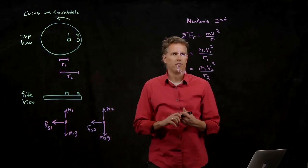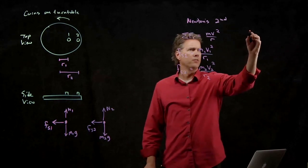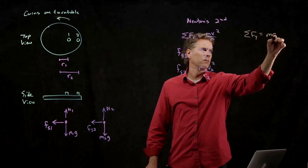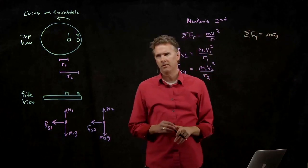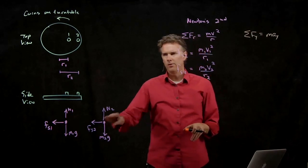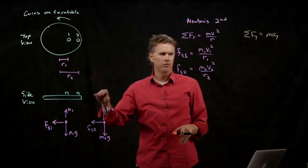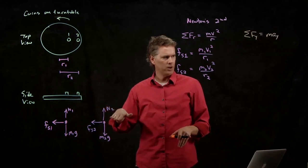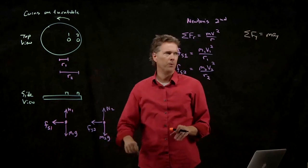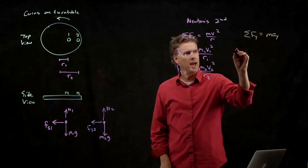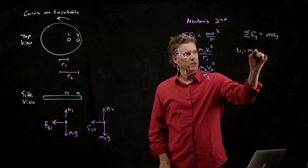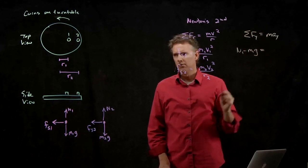What about the vertical forces? We've got sum of the forces in the y direction equals the mass times the acceleration in the y direction. And we know there's no acceleration in the y direction because the coin is going to stay on this horizontal surface. It's not going to jump up off or fall through.